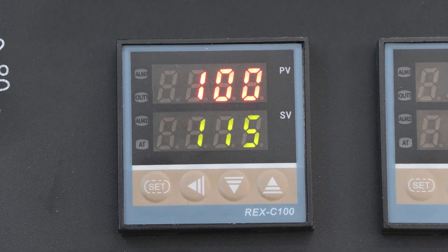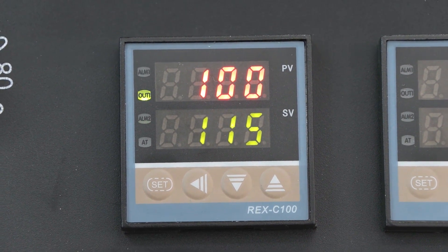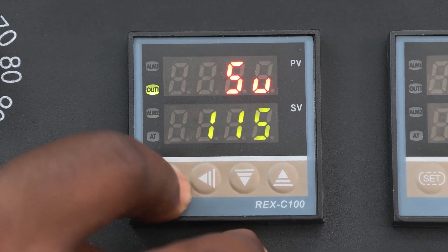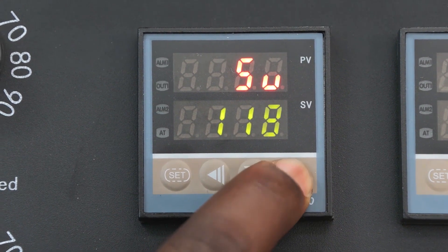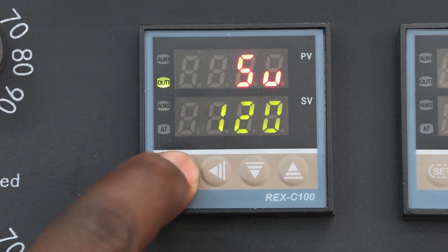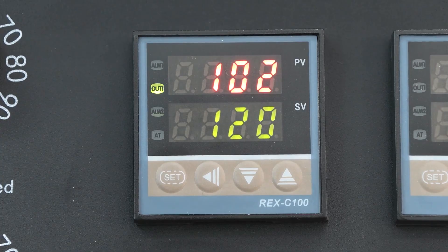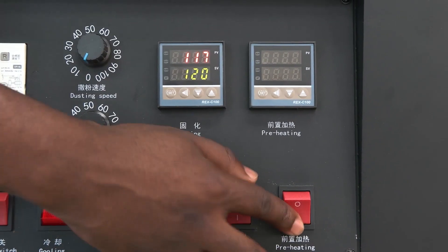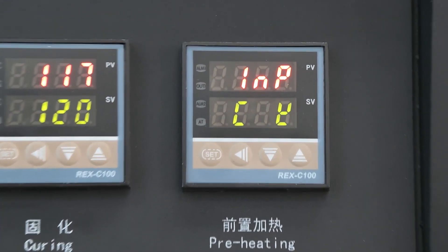So in this video we are going to be transferring our prints onto cotton and for that particular reason I'm going to be using the heat setting of 120 degrees, and for the preheating we are just going to leave this on 50 degrees.